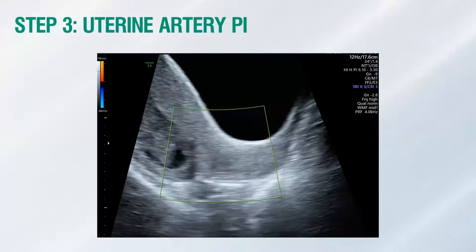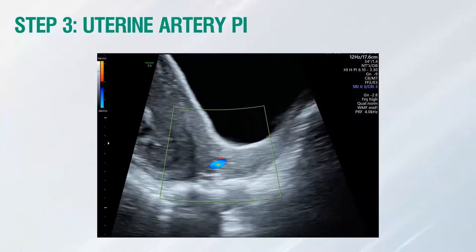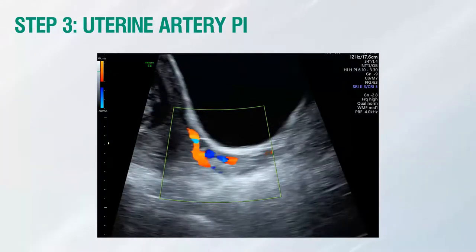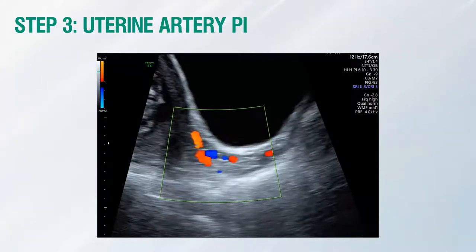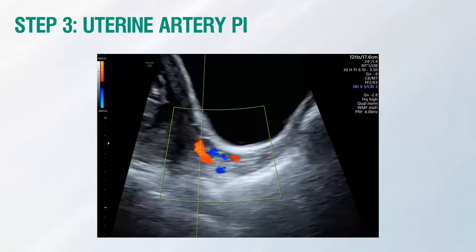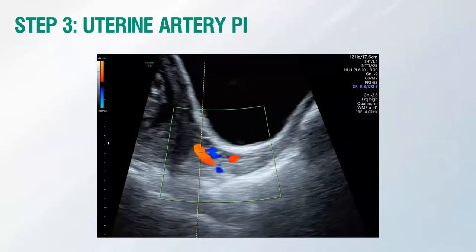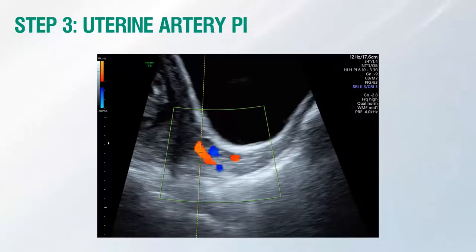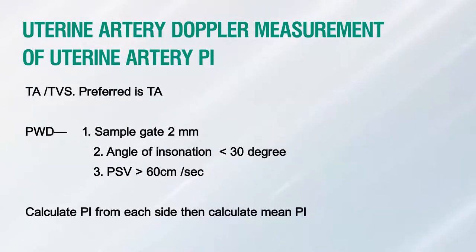Measuring the uterine artery PI is the only task radiologists need to perform in first-trimester PE and FGR screening. Uterine arteries can be assessed on trans-abdominal scan, which is preferred, with an adequately filled bladder. We obtain a sagittal section of the uterus and identify the cervical canal and the internal os. The transducer is then gently tilted from side to side, and color Doppler is used to identify the uterine artery along the side of the cervix at the level of the internal os.